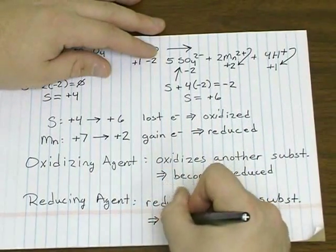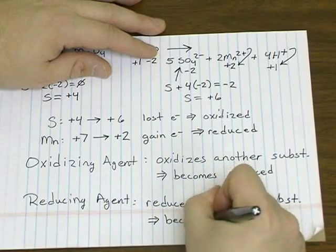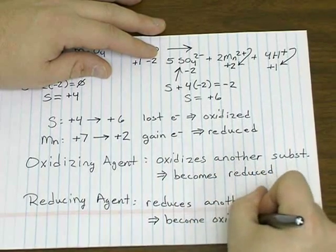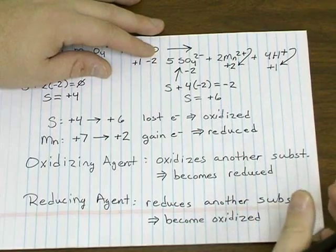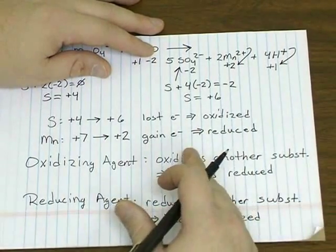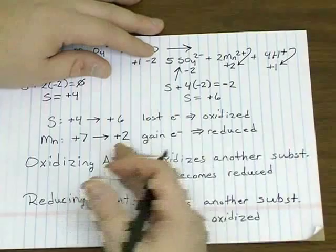Likewise, the reducing agent is going to become oxidized, because if you're going to cause something to gain electrons, you have to give up some of your own. So you've lost electrons.